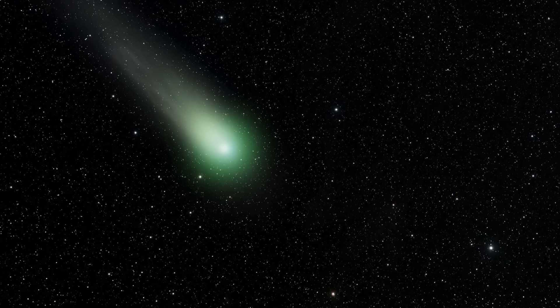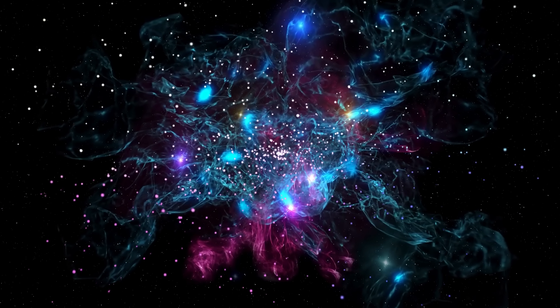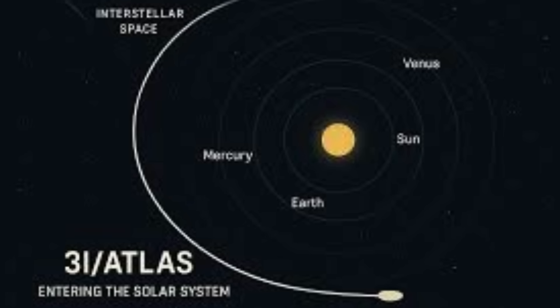In our comets, the nickel-to-iron ratio is stable, about 15 times higher than the cosmic average, but both metals are always present. With 3I-Atlas, the ratio is effectively infinite. No iron at all.